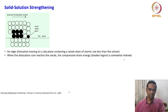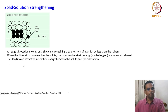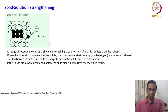What we have seen in the dislocation core is hydrostatic compression above the extra half plane. So the compressive strain energy is somewhat relieved when the small solute atom goes and gets locked inside the dislocation core. This leads to an attractive interaction energy between the solute and the dislocation. If the solute atom were positioned below the glide plane, a repulsive energy would result. A small solute atom above the glide plane produces attractive forces — attractive interaction energy.